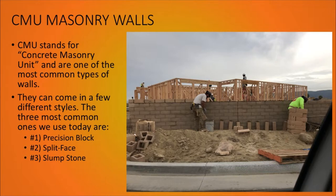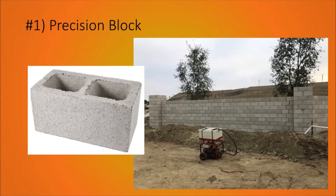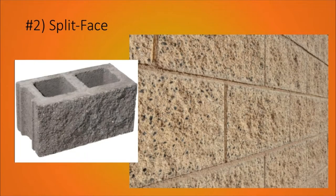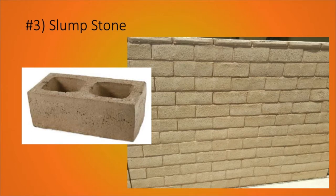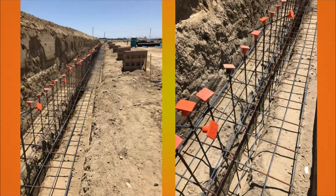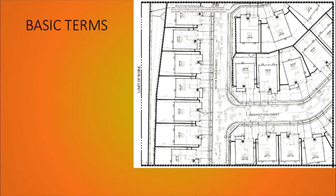There are different types of walls and fencing, but the most common type is CMU walls — that stands for Concrete Masonry Unit, as you can see in the picture on the right. They come in a few different styles. The three most common are precision block, split face, and slump stone. Precision block is very plain and simple. Split face has more texture which gives it more aesthetic appeal. Slump stone — before the concrete cures, the mold is removed and the concrete slumps a little, hence the name. Here are some cool pictures from one of our jobs showing all the rebar reinforcement that goes inside the CMU blocks.